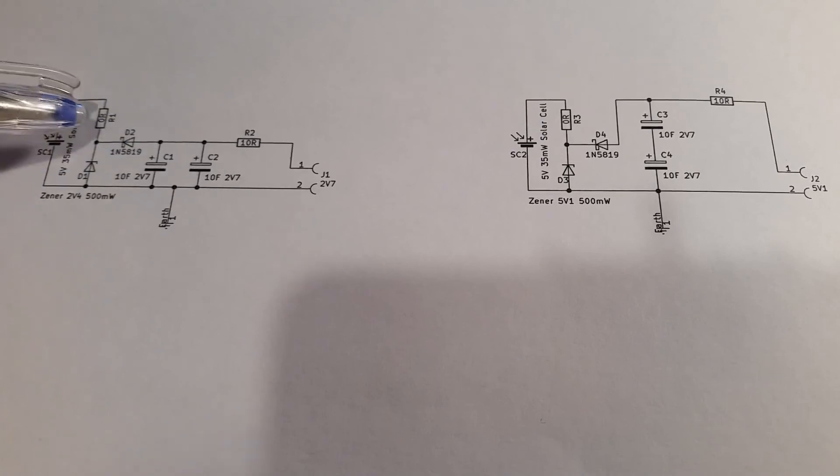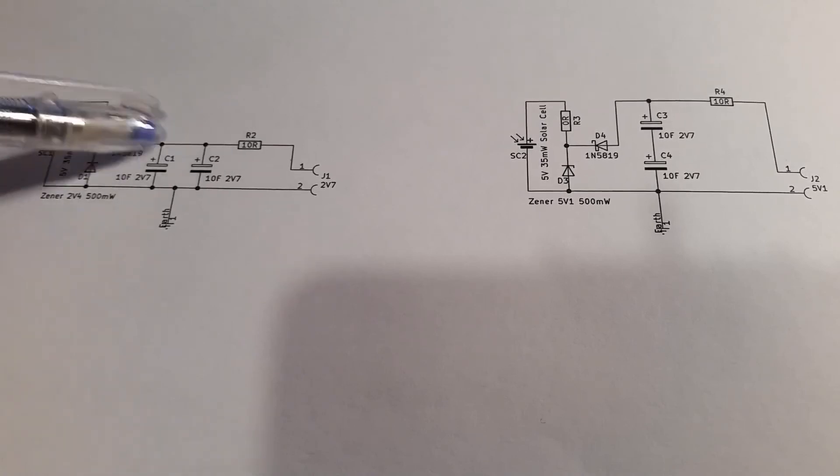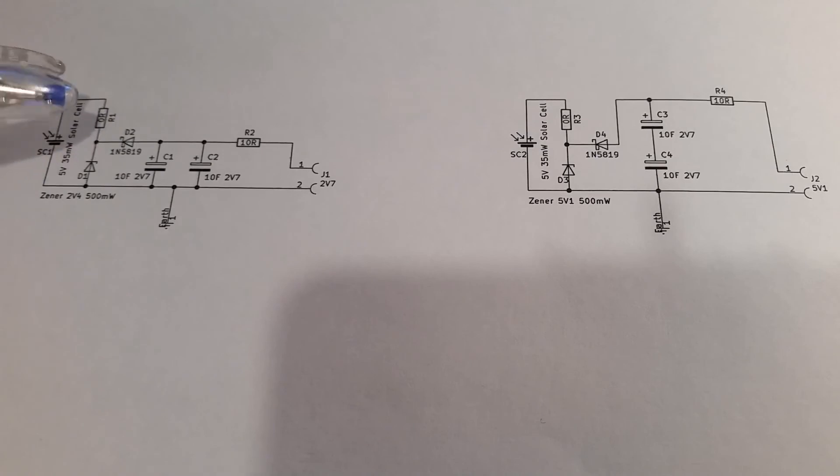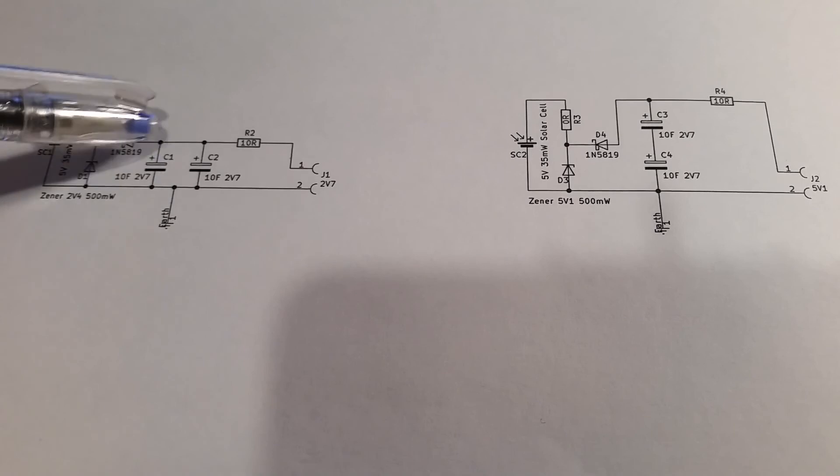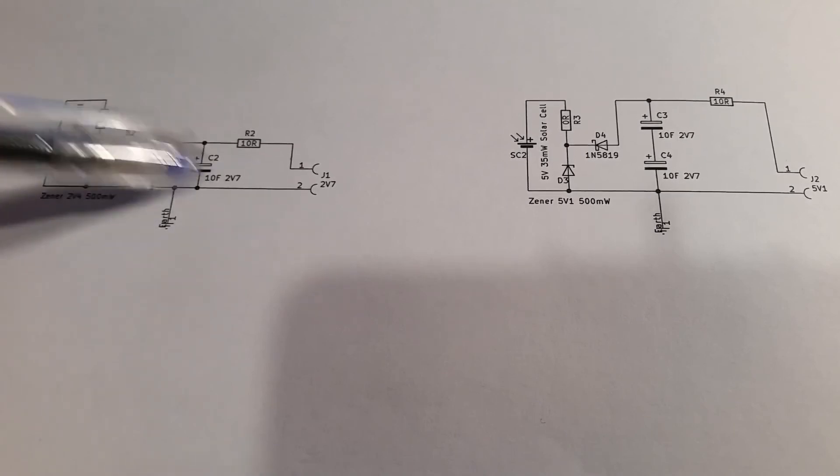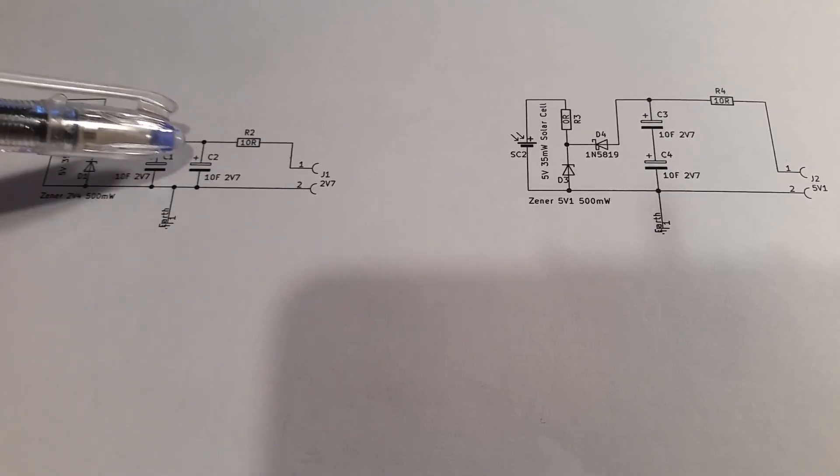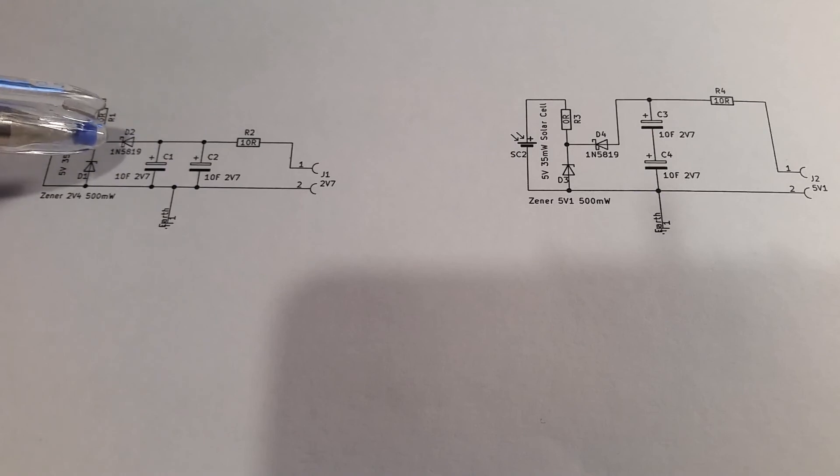And then I've got a barrier diode here, which is a germanium diode Schottky diode, which just stops any charge once it's in the capacitors going back into the solar panel. So it stops them discharging. And then I've got here the two 10 farad capacitors in parallel to generate the 2.7 volts charged current.